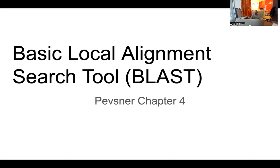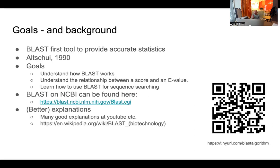To start with an overview: the first version was developed in 1990 and a later version in 1995. It was basically the first method fast enough to search databases on a local machine — fast and accurate enough to provide good statistics. It can be used for finding similarities between proteins and between genes. The version we'll mainly use is the one on the NCBI website.